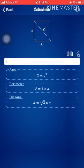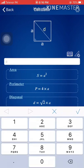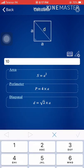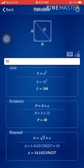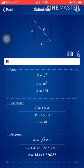Let's say one side of the square is going to be 10 units — 10 meters, 10 centimeters. When I put in the value and tap the update sign, it's going to show me the area, perimeter, and diagonal of the square. This is pretty amazing.